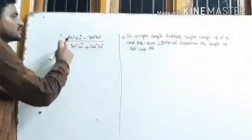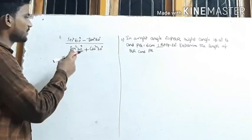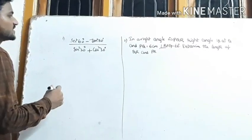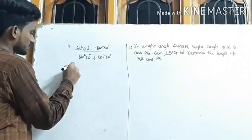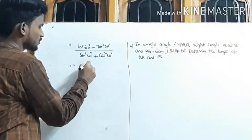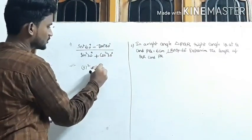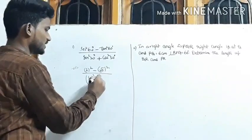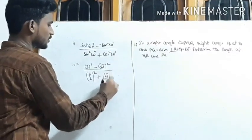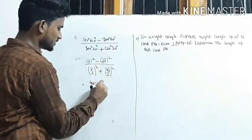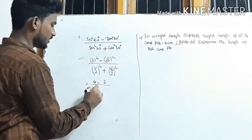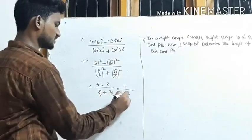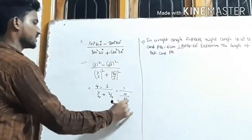Problem: Find sec²60° - tan²60° divided by sin²30° + cos²30°. Sec 60° = 2, so 2² = 4. Tan 60° = √3, so (√3)² = 3. Sin 30° = 1/2, so (1/2)² = 1/4. Cos 30° = √3/2, so (√3/2)² = 3/4. Result: (4 - 3) / (1/4 + 3/4) = 1/1 = 1. The answer is 1.